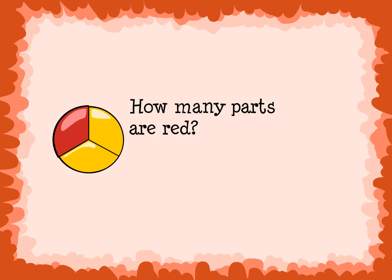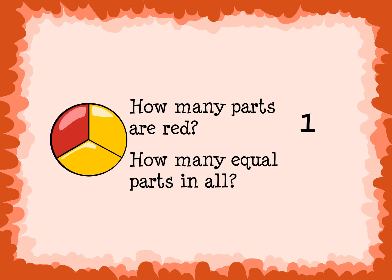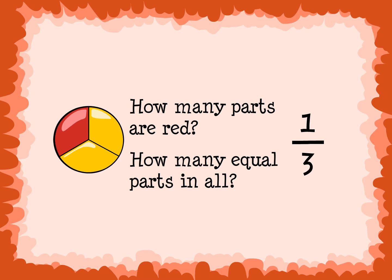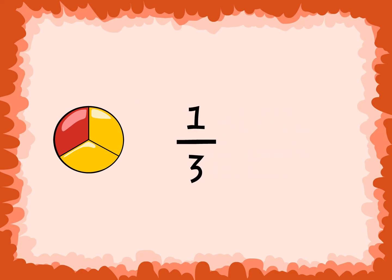Take this circle. How many parts are red? 1 — which is the numerator. How many equal parts in all? 3 — which is the denominator. What is the fraction for the red part of the circle? 1 over 3, or 1 third.